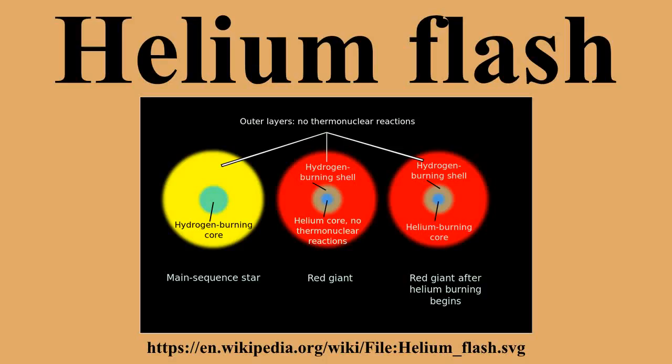A helium flash is a very brief thermal runaway nuclear fusion of large quantities of helium into carbon through the triple alpha process in the core of low mass stars up to 2.0 solar masses. During the red giant phase, a much rarer runaway helium fusion process can also occur on the surface of accreting white dwarf stars.